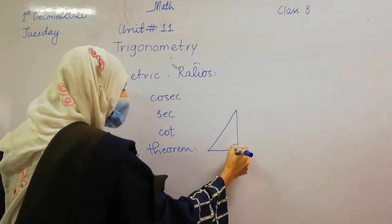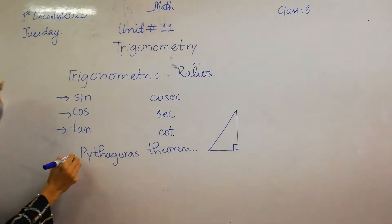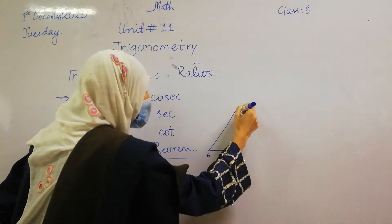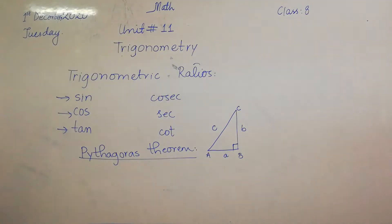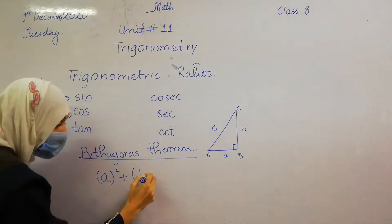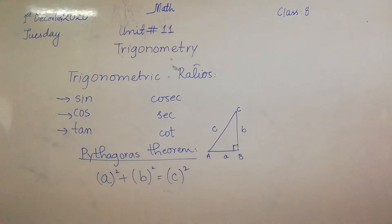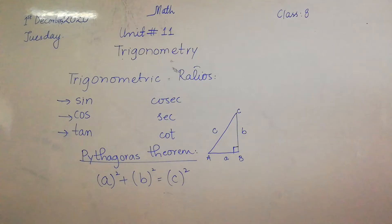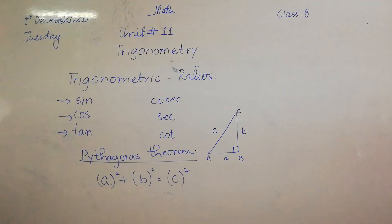A right angle triangle means the triangle having an angle of 90 degrees. For example, if we have a triangle with sides of length A, B, and C, then the Pythagorean theorem states: base squared plus perpendicular squared is equal to hypotenuse squared.